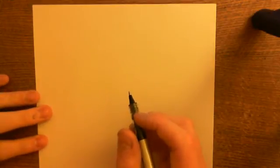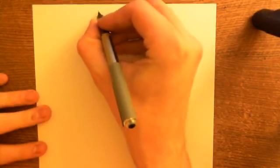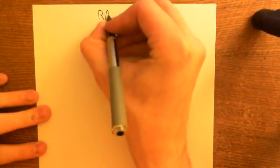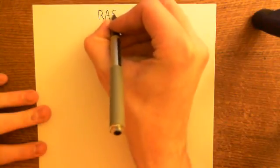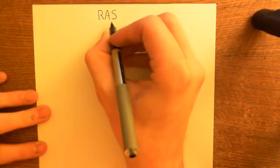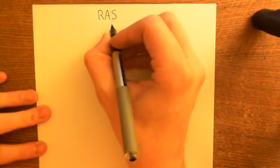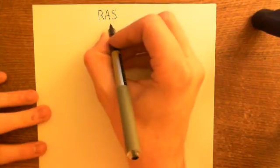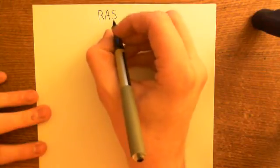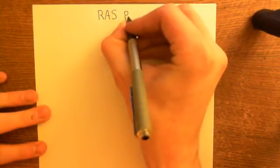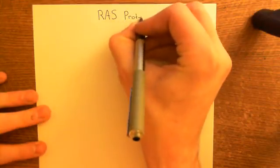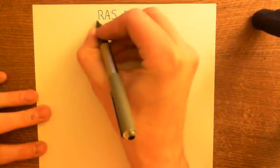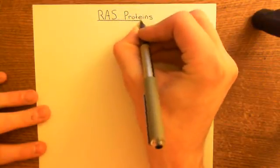Welcome to this next video in the playlist on lipid modifications of proteins. In this video, we're going to talk about the RAS proteins. The reason we're going to talk about the RAS proteins is that palmitoylation of the RAS proteins and its role in targeting RAS proteins into membranes has been very vastly studied. We're going to study RAS proteins because of the importance of lipid modification in targeting them to the cell membrane.